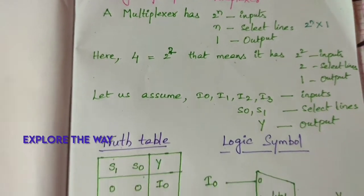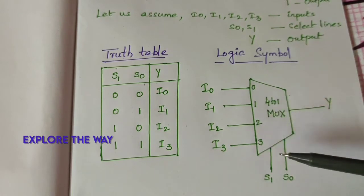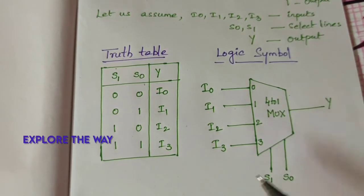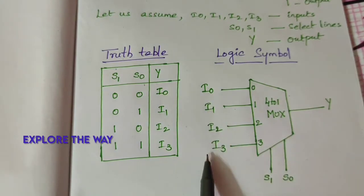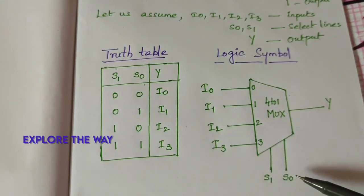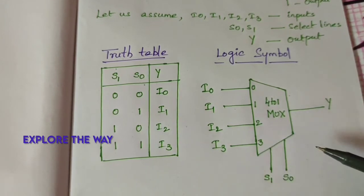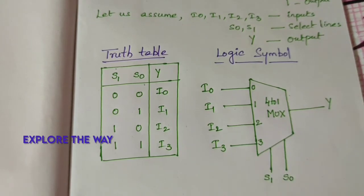Let us draw the logic symbol for the 4-to-1 multiplexer. It has 4 inputs I0 to I3, 2 select lines S0 and S1, and 1 output Y. Based on these select lines, one of the inputs is routed to the output.